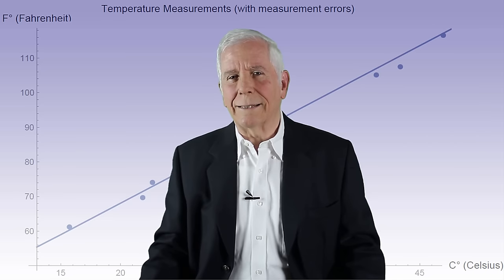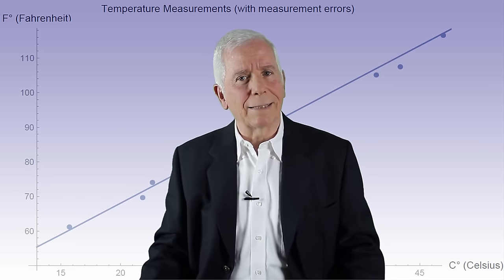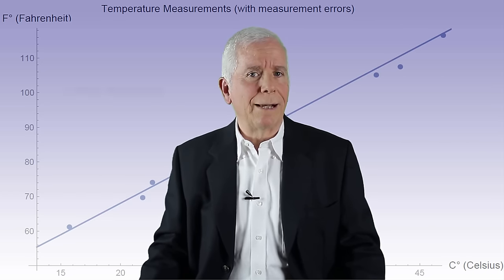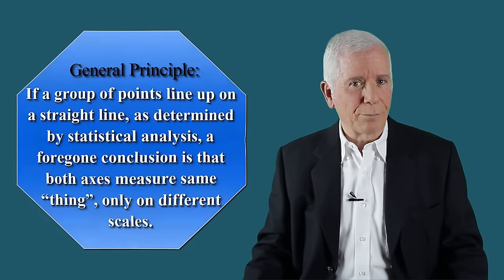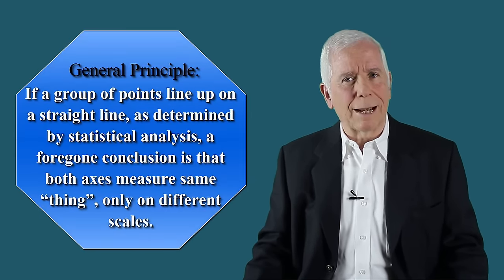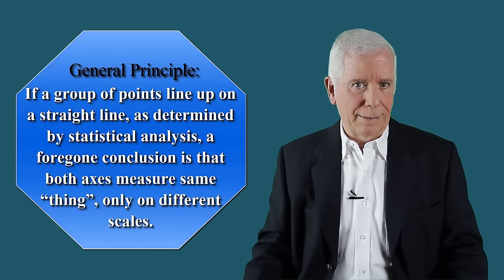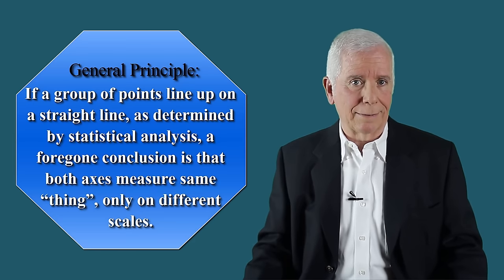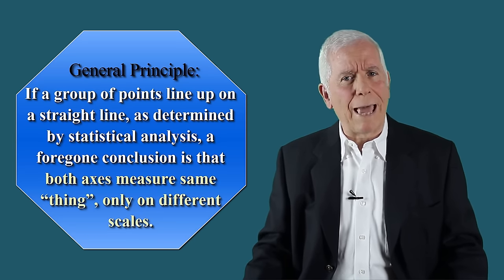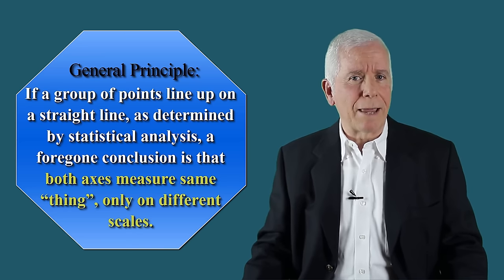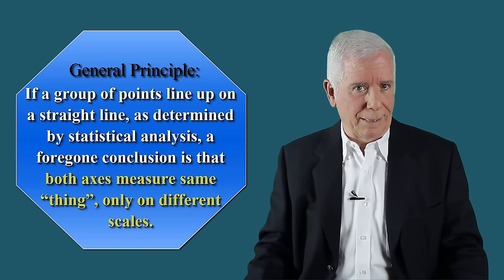The statistical technique that performs this analysis is denoted linear regression. We can now generalize. If a group of points line up on a straight line, as determined by statistical analysis, a foregone conclusion is that both axes measure the same thing only on different scales.